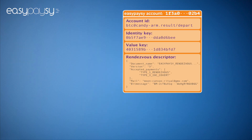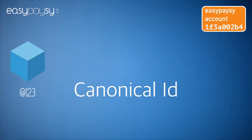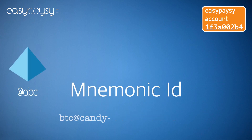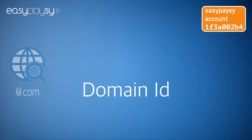Let's see an example of the same account, expressed in these three different formats: Canonical ID, Mnemonic ID, and Domain ID.